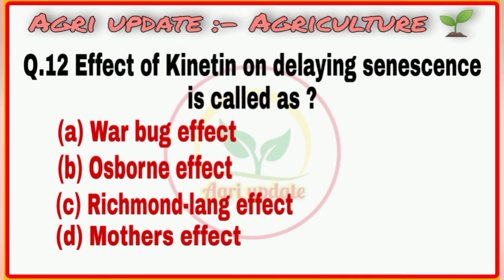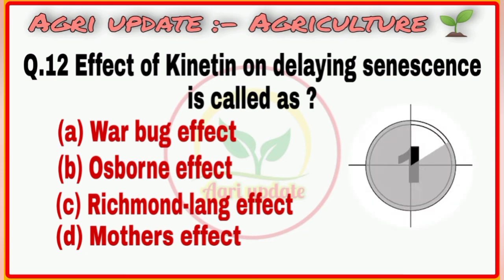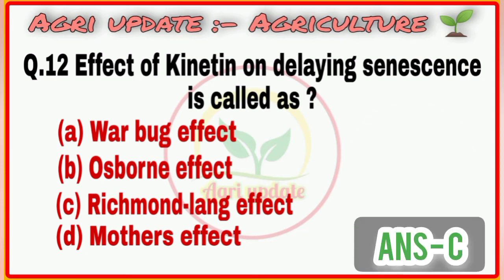Question number 12: Effect of kinetin on delaying senescence in old age. First option is Warburg effect, second option is War Swan effect, third option is Richmond Lang effect, fourth option is Mother effect. The right answer is option number C, Richmond Lang effect.